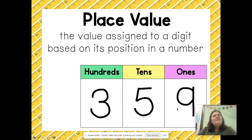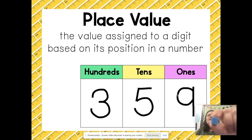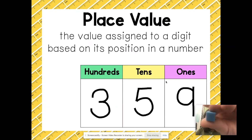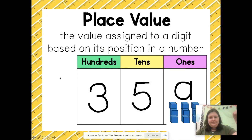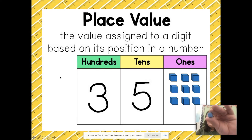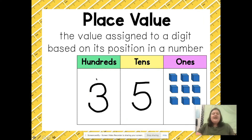I can also use place value blocks to represent a number. This little piece right here — one space — means one. I can have nine of these ones pieces, and that means the same as the digit nine.